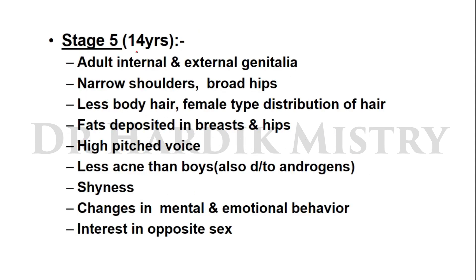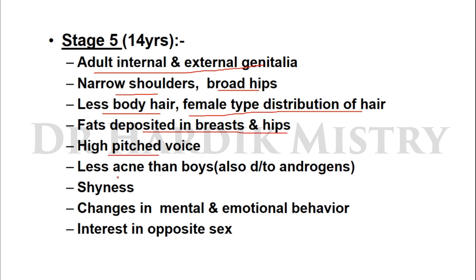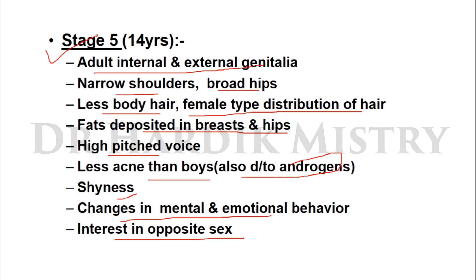In Stage 5 for girls — 14 years and onwards: development of adult type internal and external genitalia, narrow shoulders, broad hips, female-type distribution of hair, fat deposits in the breast and hips, high-pitched voice, and due to androgen effect, shyness develops. Changes in mental and emotional behavior and interest in the opposite sex also develop from 14 years onwards.